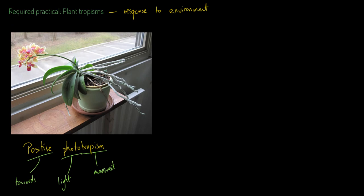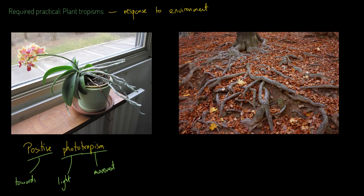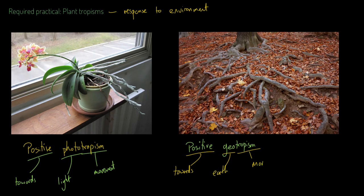These are the roots of a tree and they're showing some interesting tropisms. For example, they are showing positive geotropism. Positive again meaning towards, geo meaning things to do with the earth, and tropism again the idea of movement. So these roots are moving in the direction of the earth, in the direction of gravity. And negative geotropism is also a thing — you can see a tree there with its trunk and shoot showing negative geotropism, growing away from the direction of gravity.